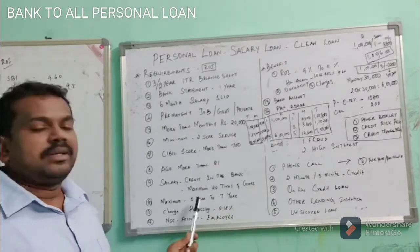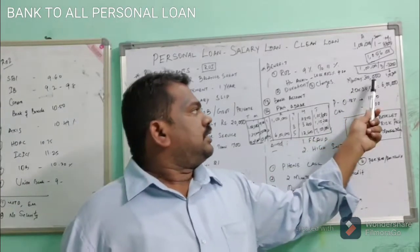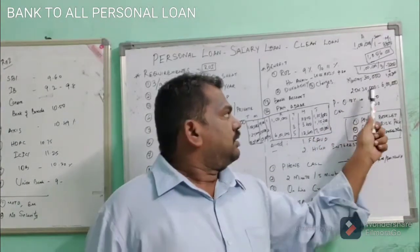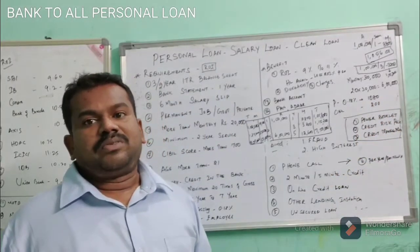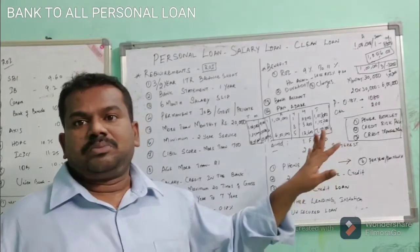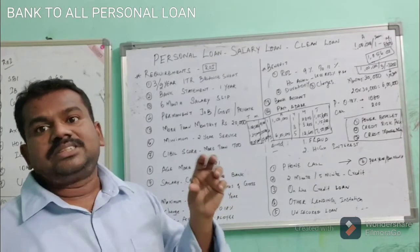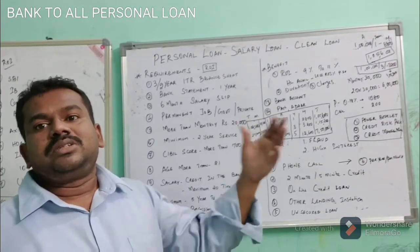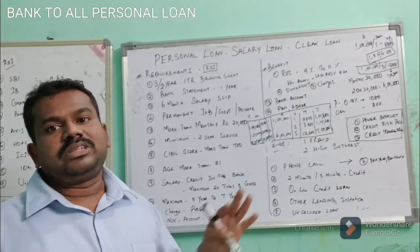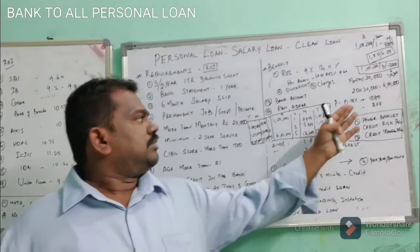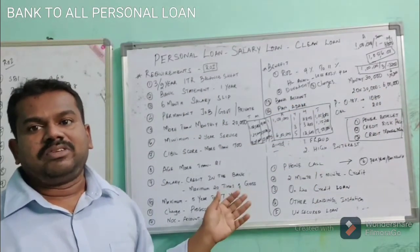Banks can give up to 20 times your salary as a loan. Suppose your salary is ₹30,000 — then they can give ₹6 lakh. But for a ₹6 lakh loan, 40% of your salary, which is ₹24,000, must be available as EMI capacity. The remaining ₹6,000 is what's left, and for that EMI the loan amount works out to nearly ₹2.5–3 lakhs. So even if you are eligible for ₹6 lakh, they will check your net take-home pay.